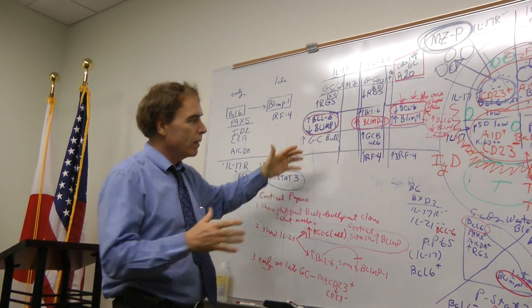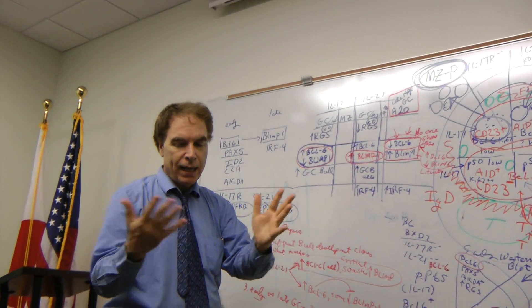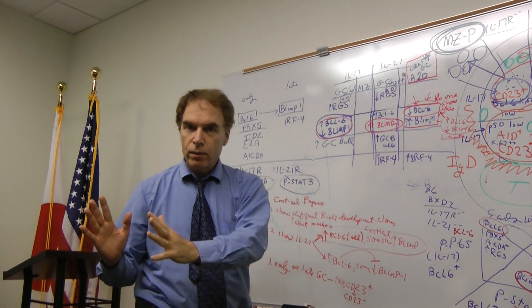BLIMP-1 is a master regulator of development to secretory state. That's how it developed, knockout, no secretory B cells. So that was the final stage of the entire germinal center development.